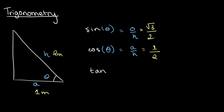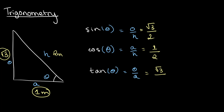Sine is the opposite side over the hypotenuse, and cosine is the adjacent side over the hypotenuse. Tangent gives us the ratio between the opposite and adjacent sides, so tan of theta equals O over A. In our example, the side opposite to theta is root 3 and the side adjacent to theta is 1, so tan of theta equals root 3 over 1, which gives us that tan of theta is equal to the square root of 3.